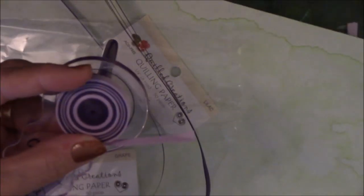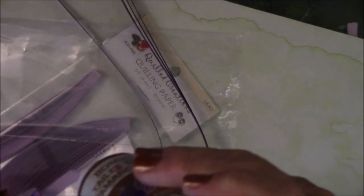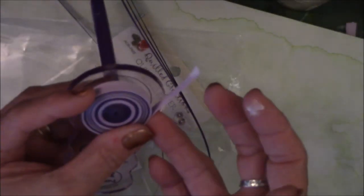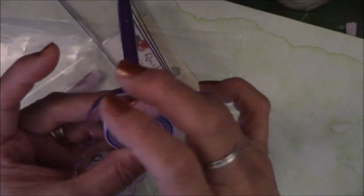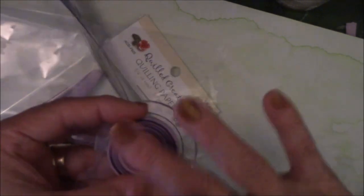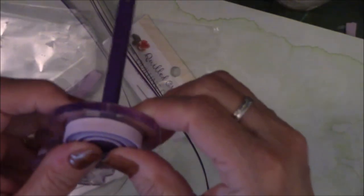I've rolled as much as I want to roll because I don't want to make this too large. Put a little glue on the end. Not a lot. And then I'm just going to fold it around here and just give it a little pat to make sure it's going to stay. So this is completely flat on the top.